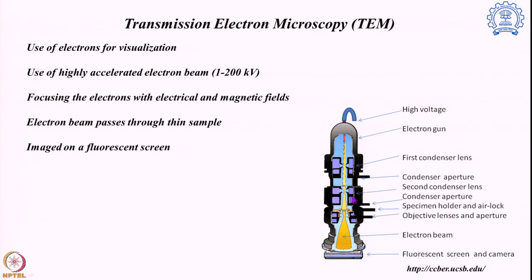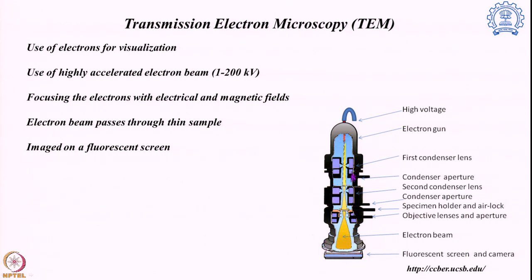There are generally two different setups of such lenses used, known as the first condenser lens and the second condenser lens. Then the beam interacts with the sample, which is prepared to be very thin. Sample preparation is a very important step in TEM — we have to make the sample very thin so that the electrons condensed through the electromagnetic lenses focus on only a very minute amount of sample. When the electrons hit the sample, their interaction is recorded on the fluorescent screen, which records the interaction between the electron and the sample.